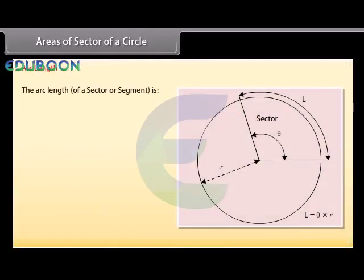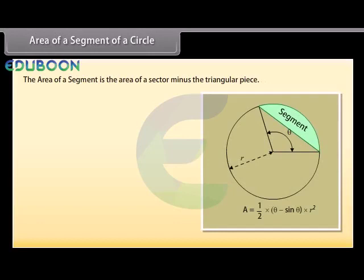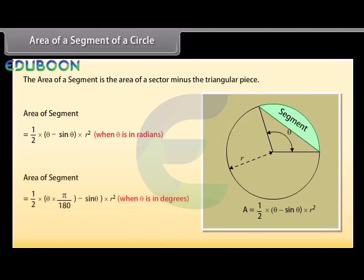Arc length: By the same reasoning, the arc length of a sector is L = θr when θ is in radians, or L = θ × (π/180) × r when θ is in degrees. Area of a segment of a circle: The area of a segment is the area of a sector minus the triangular piece. Area of segment = ½ × (θ − sin θ) × r² when θ is in radians, or ½ × (θ × π/180 − sin θ) × r² when θ is in degrees.